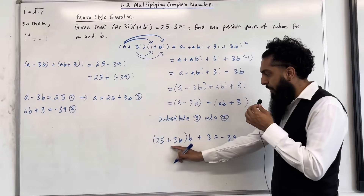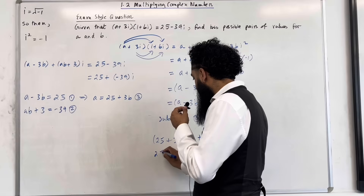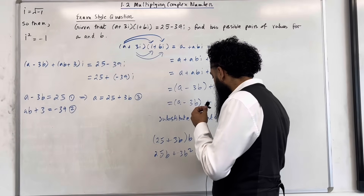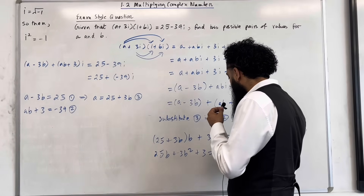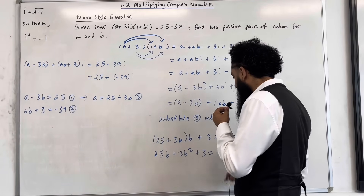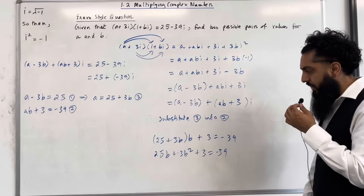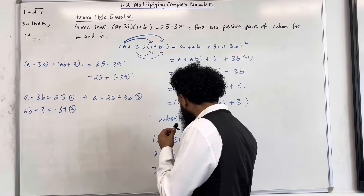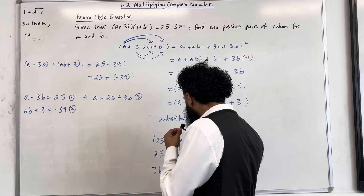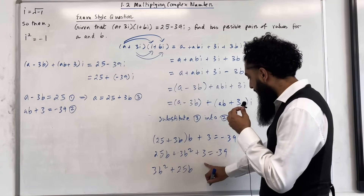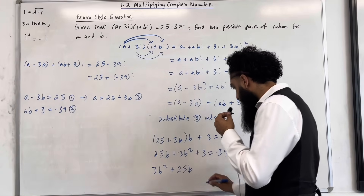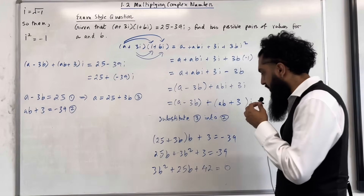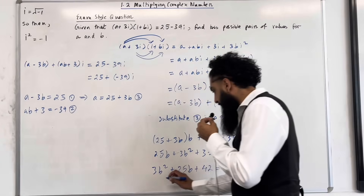I'm going to expand the bracket. 25b plus 3b squared plus 3 equals minus 39. Taking everything to one side: 3b squared plus 25b, then 3 plus 39 gives 42, equal to 0.